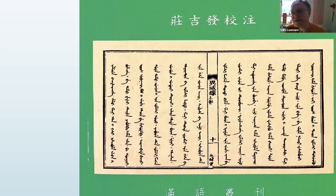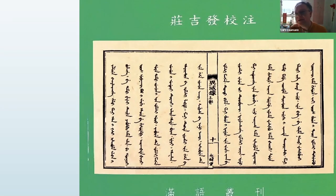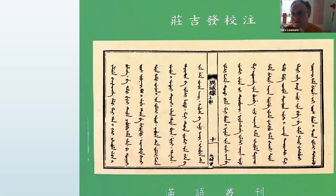If you get an image of a script that runs from right to left and is written with dots and circles, you get very close to a language used at the western end of Asia — the Arabian Peninsula and Northern Africa — namely Arabic. So how are Arabic and Manchu script, Mongolian script, related?